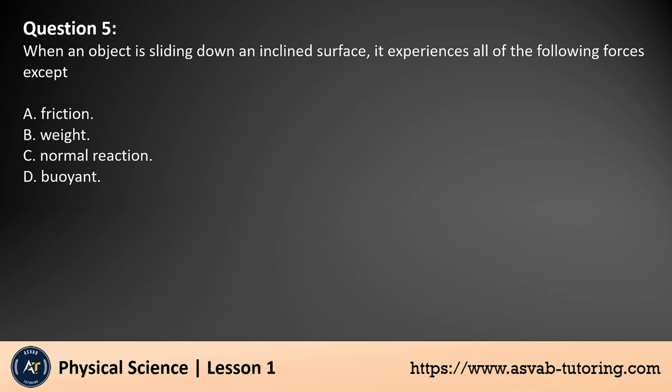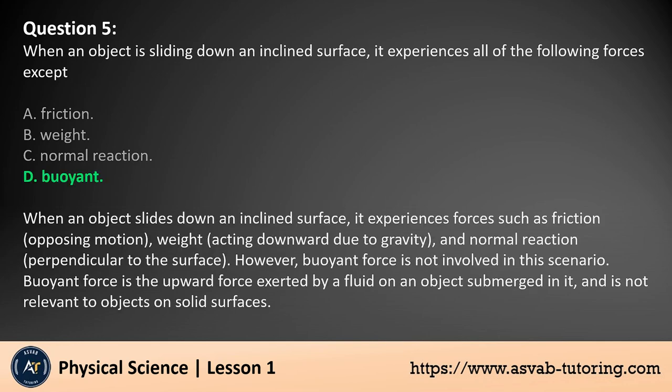Question 5: When an object is sliding down an inclined surface, it experiences all of the following forces except A. Friction, B. Weight, C. Normal reaction, D. Buoyant. The answer is D. When an object slides down an inclined surface, it experiences forces such as friction opposing motion, weight acting downward due to gravity, and normal reaction perpendicular to the surface. However, buoyant force is not involved in this scenario. Buoyant force is the upward force exerted by a fluid on an object submerged in it, and is not relevant to objects on solid surfaces.